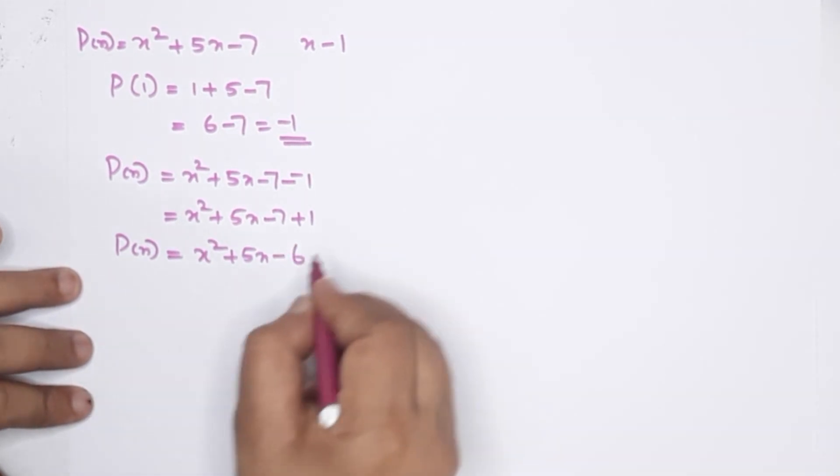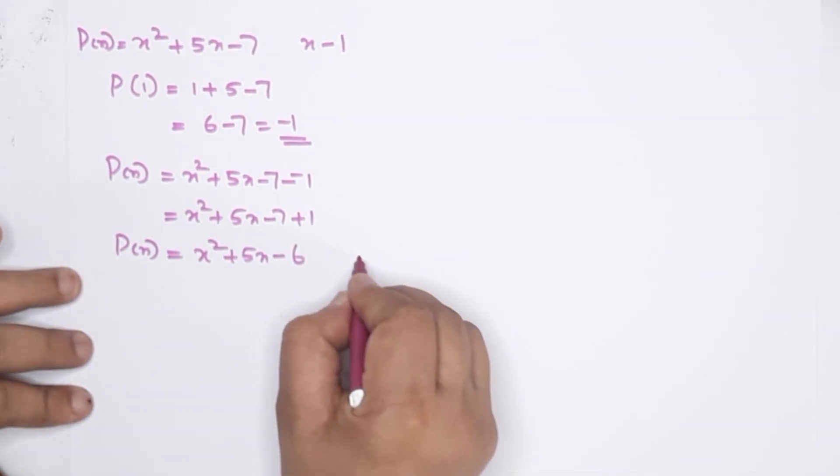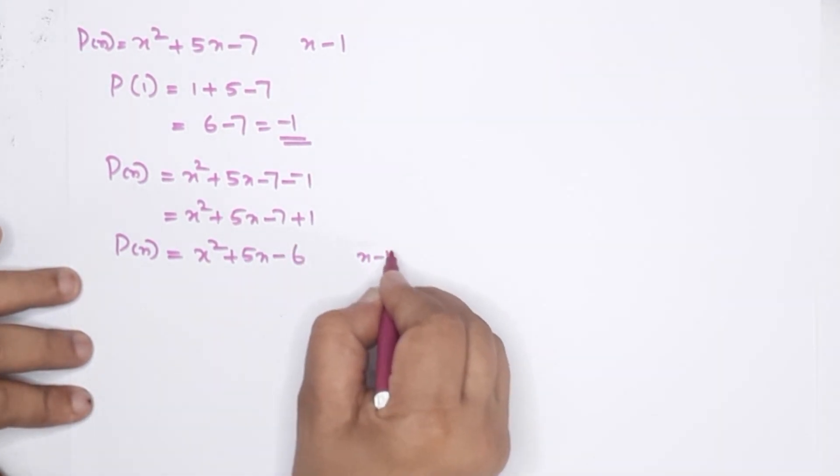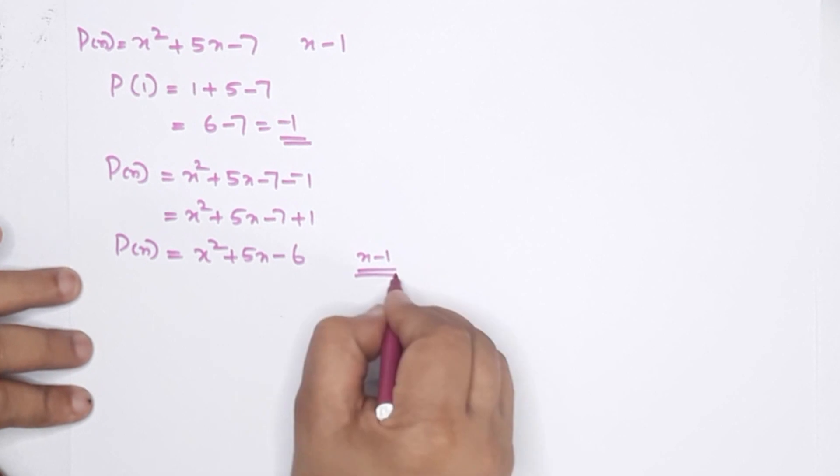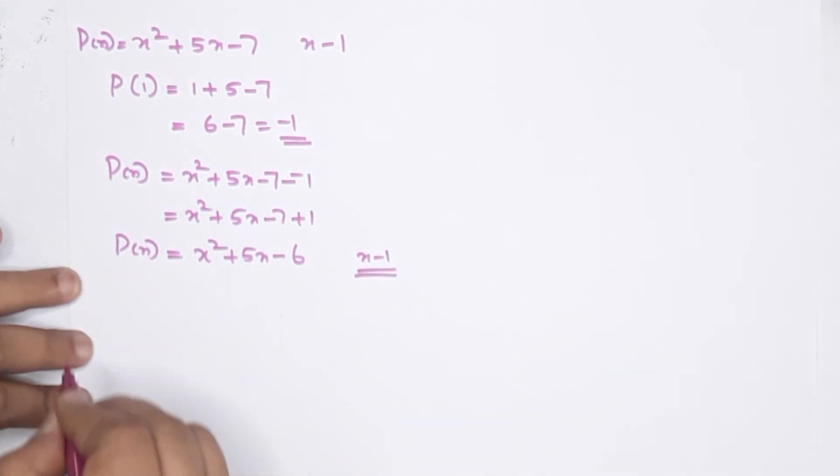We now have the polynomial x squared plus 5x minus 6 with factor x minus 1. We need to find another factor.